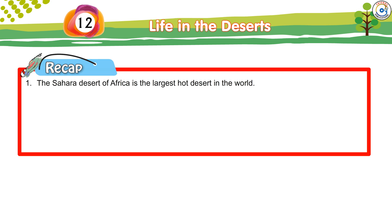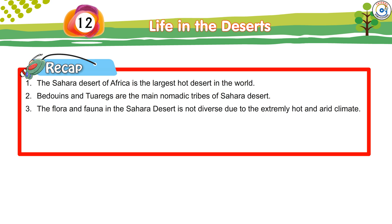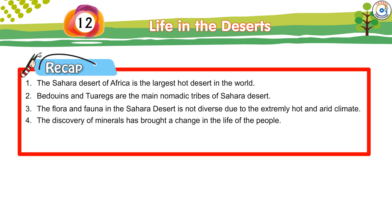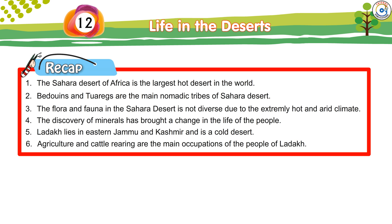Recap: The Sahara Desert of Africa is the largest hot desert in the world. Bedouins and Tuaregs are the main nomadic tribes of the Sahara Desert. The flora and fauna in the Sahara Desert is not diverse due to the extremely hot and arid climate. The discovery of minerals has brought a change in the life of the people. Ladakh lies in eastern Jammu and Kashmir and is a cold desert. Agriculture and cattle rearing are the main occupations of the people of Ladakh.